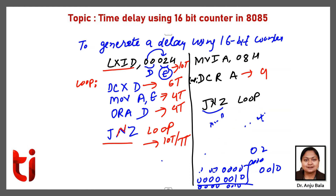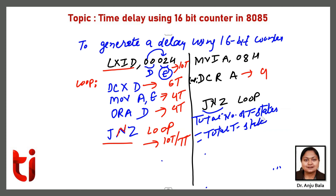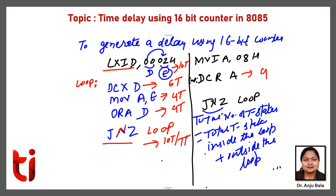This formula was already discussed for finding delay using 8-bit registers. The total number of T-states equals the total T-states required inside the loop plus outside the loop. Total T-states inside the loop: 6 + 4 + 4 + 10 = 24 T-states per iteration. On the last iteration, JNZ takes 7 T-states instead of 10, so we subtract 3T for the final pass.